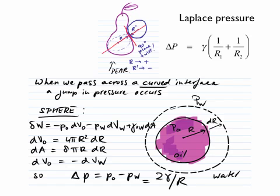So the change in the expansion in volume of oil basically is minus the change in water. And if you then fill in these numbers in the top equation, you basically end up with ΔP is P oil minus P water, is two times the interfacial tension divided by the radius of the oil droplet.